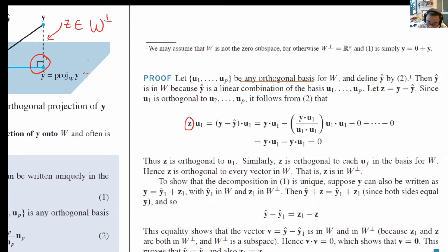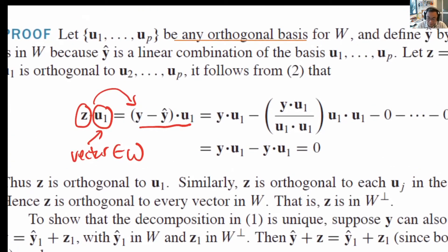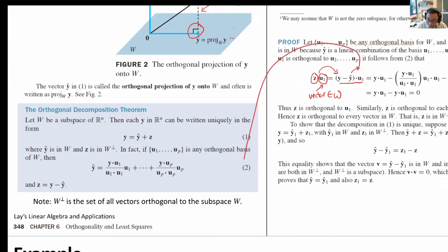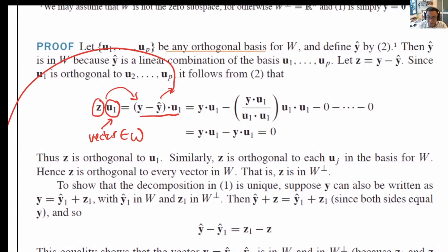What we do is that we take z, which is y minus y hat, we dot product it with u1, where u1, as you remember, is one of the vectors in the space of w, the first orthogonal vector in w. Let us open up this bracket. Remembering that y hat is made up of equation 2, we substitute equation 2 into this equation and we evaluate.